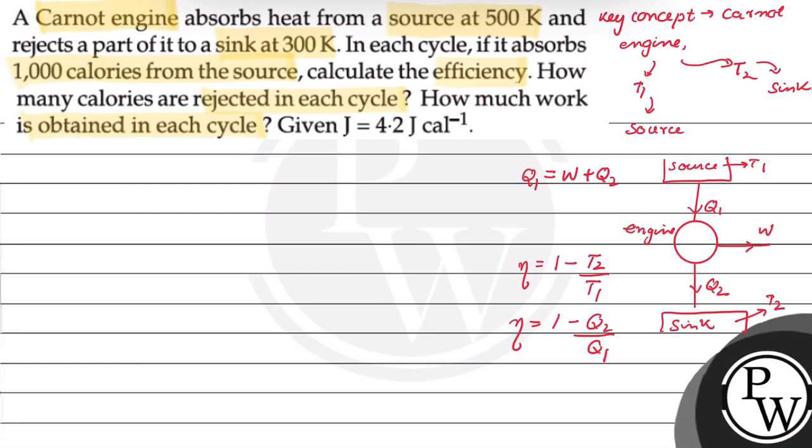Now, for this question, efficiency eta is equal to 1 minus T2 upon T1, which equals 1 minus 300 upon 500, equals 2 by 5, equals 0.4. This is the efficiency of the Carnot engine.